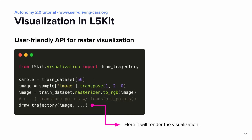You can also visualize data using our visualization API. For that purpose, I will be using the draw_trajectory API. I'm indexing one particular frame of the ego dataset that we just created, and then calling draw_trajectory with the image acquired from that sample and some parameterization configs. In the next slide, I will show you how this output looks.